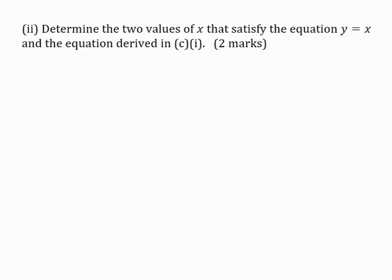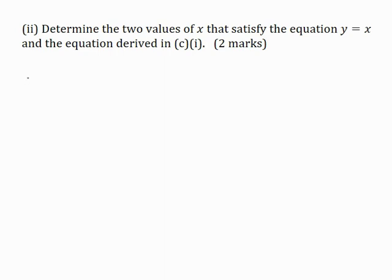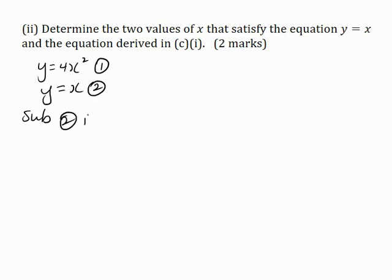Part 2: Determine the two values of x that satisfy the equation y equals x and the equation derived in C part 1, for two marks. The equation from C part 1 is y equals 4x squared — I'll call this equation 1. The second equation given is y equals x — I'll call this equation 2. I will substitute equation 2 into equation 1.